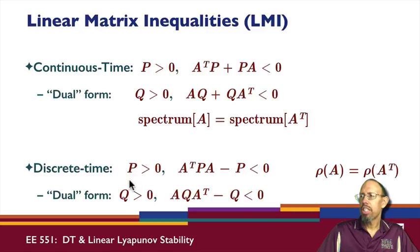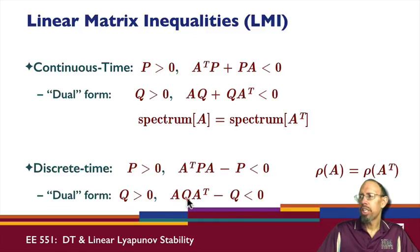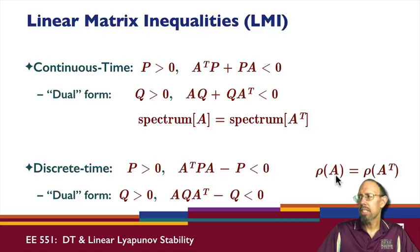Similarly, for discrete time systems we have this linear matrix inequality, and we have this equivalent linear matrix inequality in A transpose. Again, because the spectrum of A equals the spectrum of A transpose, the spectral radius of A equals the spectral radius of A transpose.